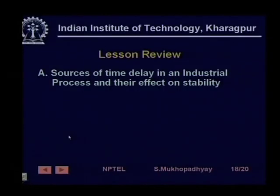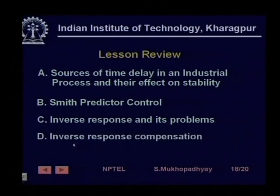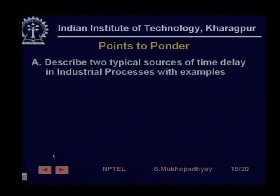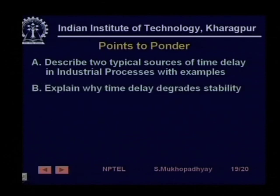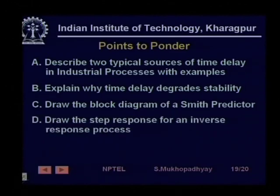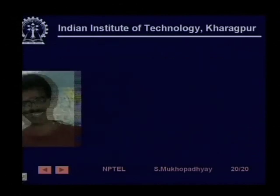We are now coming to the end of the lecture. First we saw the sources of time delays and their effects on stability, then we saw a way of controlling using Smith predictor. We did the same for inverse response — how it arises in a process, its problems, and a way of inverse response compensation. Points to ponder: describe two typical sources of time delay in industrial processes; explain why time delay degrades stability; draw the block diagram of a Smith predictor; sketch the step response for an inverse response process; and draw the block diagram of an inverse response compensator. That is all for today. Thank you very much.